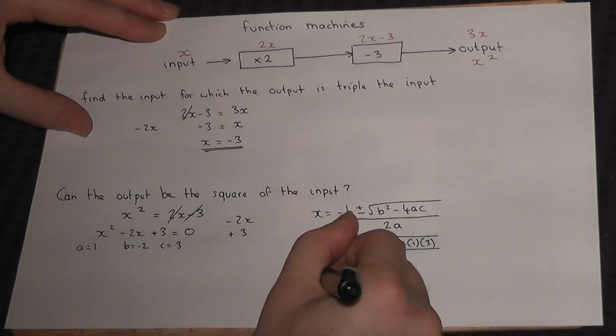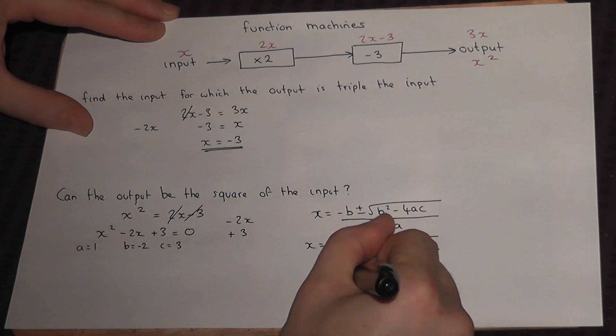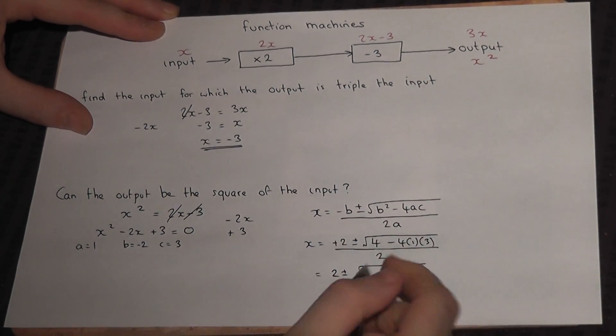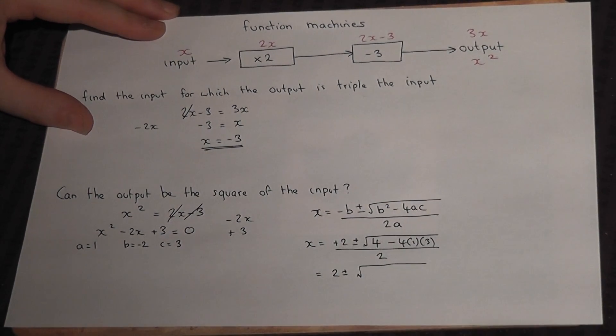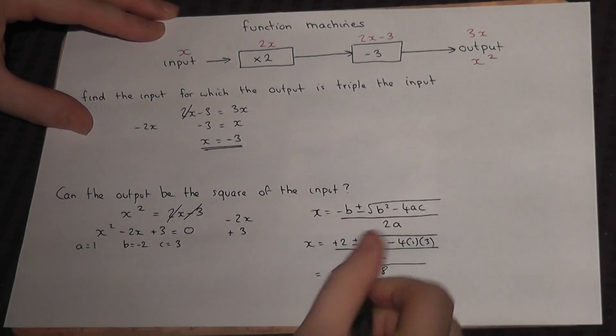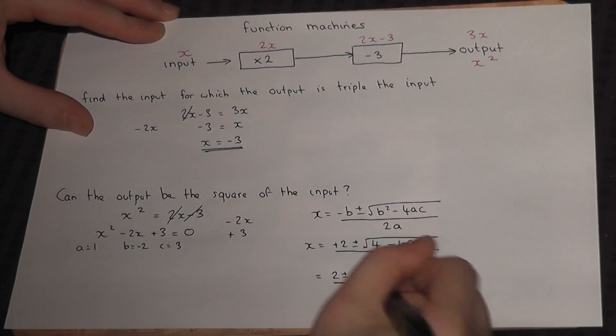Which, if you try and work out, becomes 2 plus or minus the square root of 4 take away 12, which is minus 8, all divided by 2.